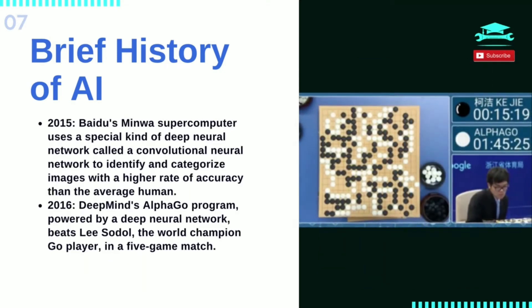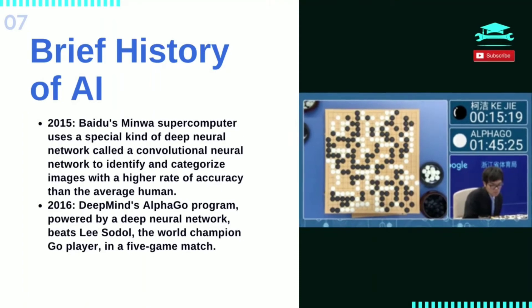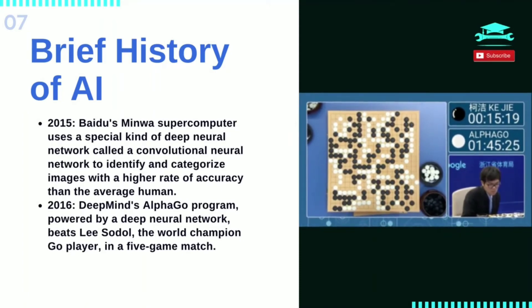In 2015, Baidu's Minwa supercomputer used a special kind of deep neural network called a convolutional neural network to identify and categorize images with a higher rate of accuracy than the average human.